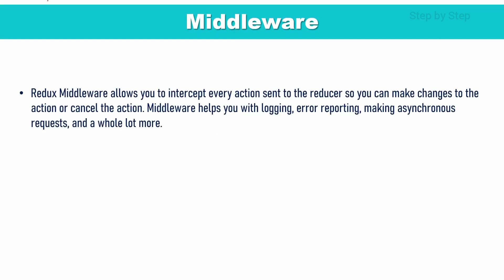Middleware will allow you to intercept every action sent to the reducer. Whatever action we are sending to the reducer, it will allow us to intercept those actions so that we can make changes to the actions and also we can cancel those actions. When we use this middleware, basically if we use APIs to display logging, to find error reporting, or making asynchronous requests, we can do a lot of things using this middleware.